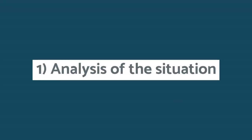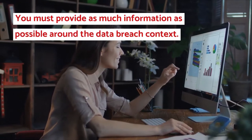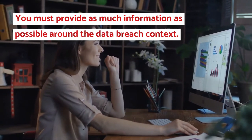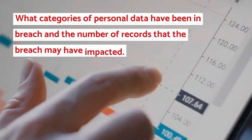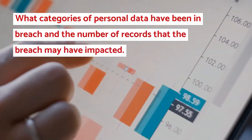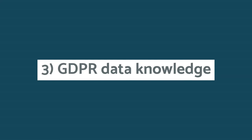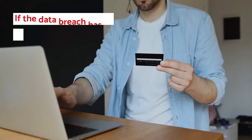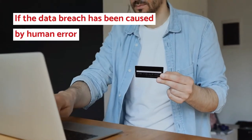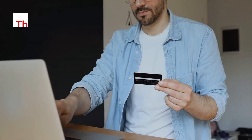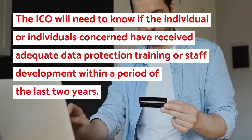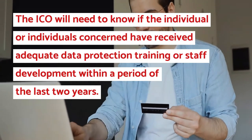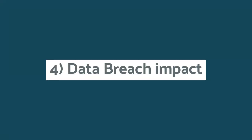What information needs to be reported? 1. Analysis of the situation — you must provide as much information as possible around the data breach context. 2. Impact — what categories of personal data have been in breach and the number of records that the breach may have impacted. 3. GDPR data knowledge — if the data breach has been caused by human error, the ICO will need to know if the individual or individuals concerned have received adequate data protection training.